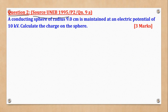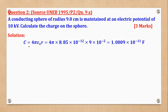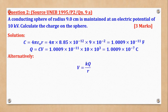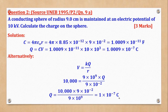Question 2 came from UNEM 1995, paper 2 question 9. A conducting sphere of radius 9 cm is maintained at an electric potential of 10 kV. Calculate the charge on the sphere. This is the same format as question 1. Method 1: find capacitance using C = 4 pi epsilon-naught r, then find charge using Q = CV. Method 2: use V = kQ over r, substitute for V, k, and r, then make Q the subject to get the answer. Any of the two methods is acceptable.